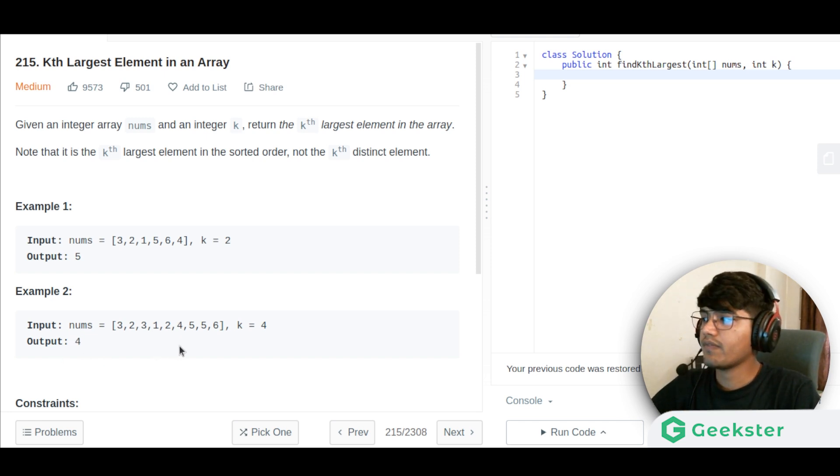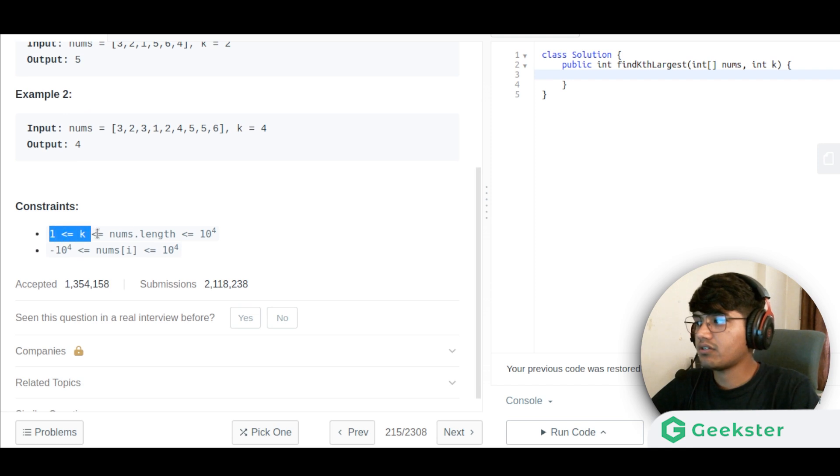That's pretty straightforward. Nums.length can range from 1 to 10 to the power 4, and values can be from minus 10 to the power 4 to 10 to the power 4.